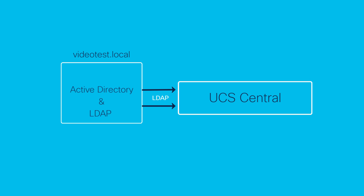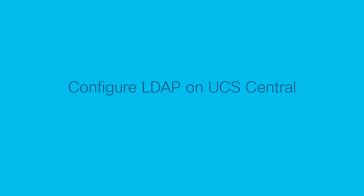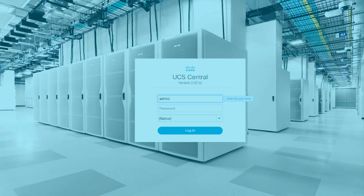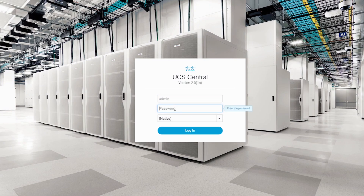The configuration is done on both the Windows Server side and on UCS Central. The Microsoft Active Directory and LDAP services have been pre-configured and operational, therefore this video will focus on setting up UCS Central. For this, access the UCS Central web interface.